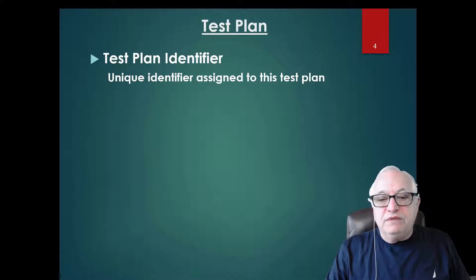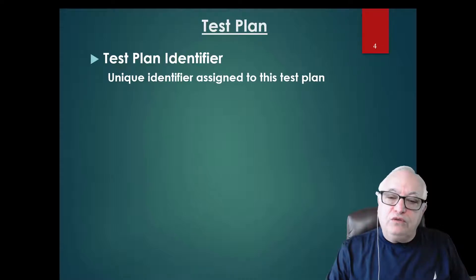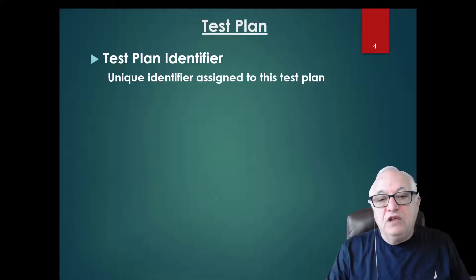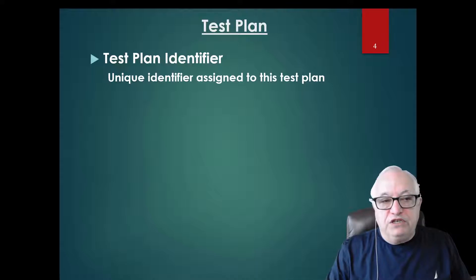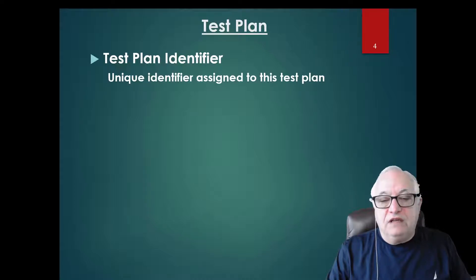So if something happens later on, you can always go back to your plan and say, 'This is what we agreed to.' If somebody wants a change, then we may have an impact to schedule or budget. Hence, your test plan must be under configuration control, so not everybody can go around changing it.